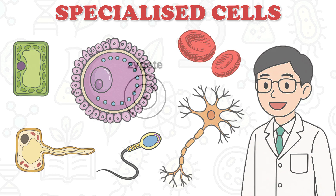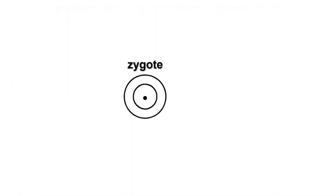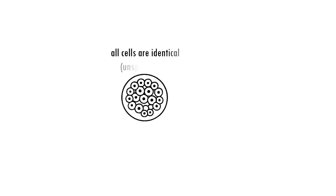In humans, life begins as a single cell called a zygote, which is simply a fertilized egg. This cell then divides by mitosis into two cells, then four, and continues dividing. Initially, all of these cells are identical and not yet specialized.